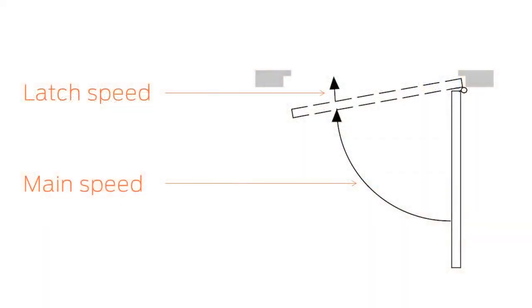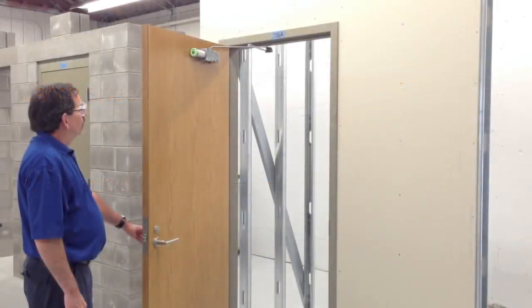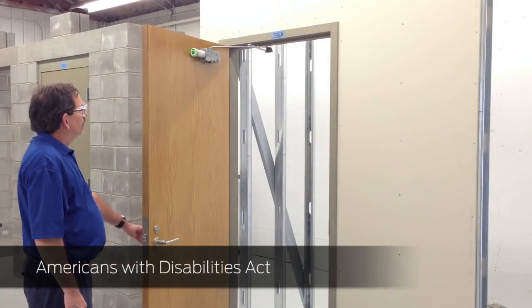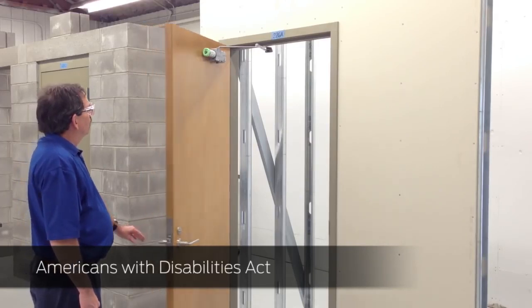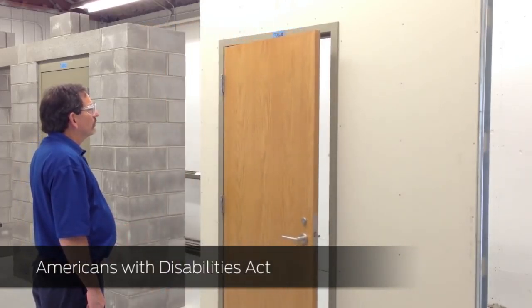The next two hydraulic adjustments are main speed and latch speed. The main speed is the speed at which the door closes from its fully open position to about 20 degrees. The latch speed is the speed at which the door closes during its last 20 degrees of closing. When adjusting closing speed, remember the Americans with Disabilities Act requires doors to take, at minimum, 3 seconds to close from 70 degrees to within 3 inches of the latch.